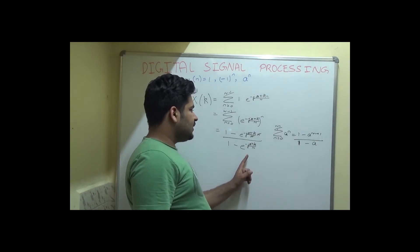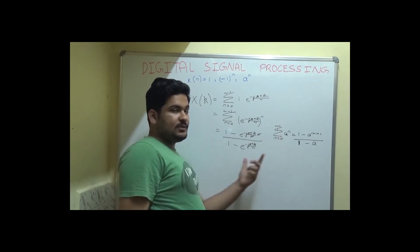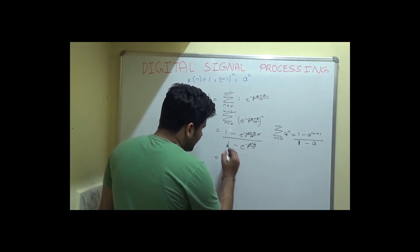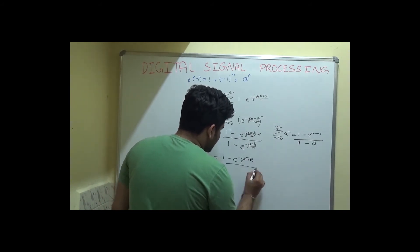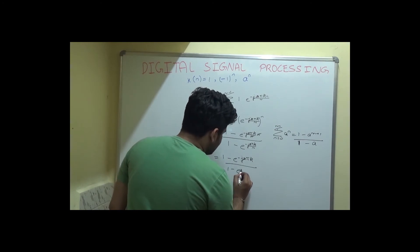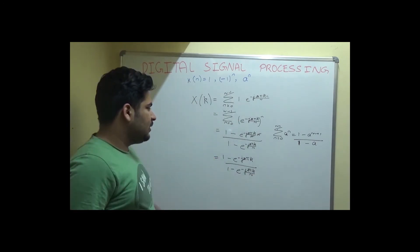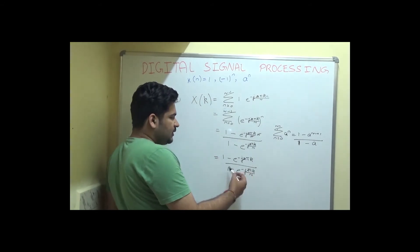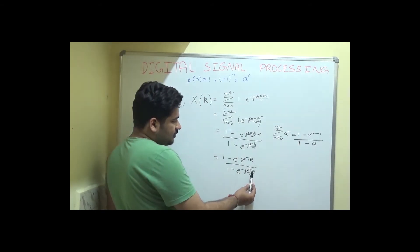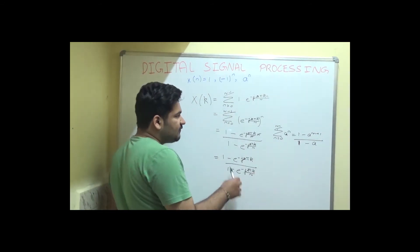Now that I have computed this, simplifying gives: 1 minus e raised to the power minus j 2 pi k, divided by 1 minus e raised to the power minus j 2 pi k divided by N. However, when k equals 0 this expression fails, because substituting k=0 gives a 0 by 0 indeterminate form. Hence, this expression is invalid for k equals 0.